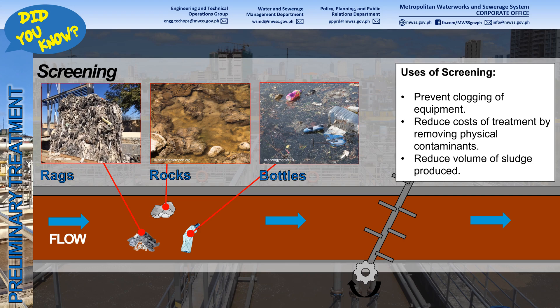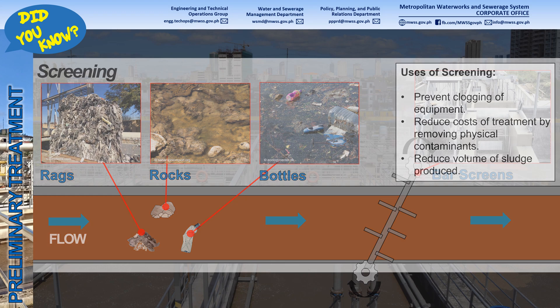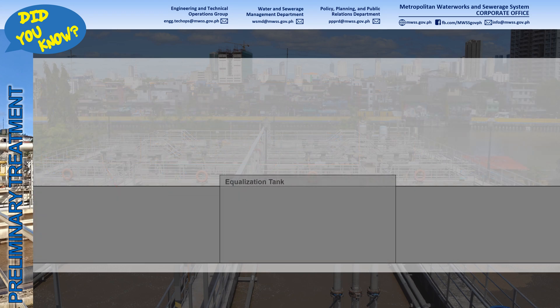Screening is used to prevent clogging of equipment, reduce costs of treatment by removing physical contaminants, and reduce the volume of sludge produced.